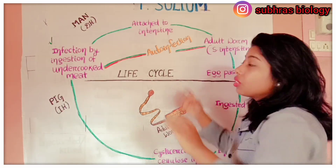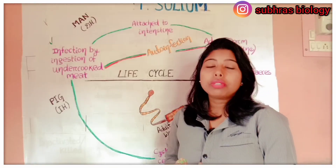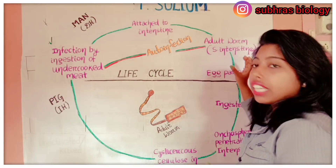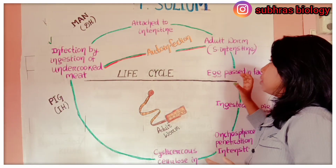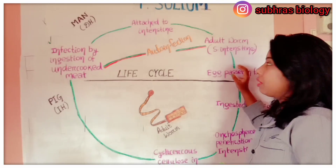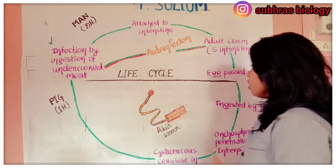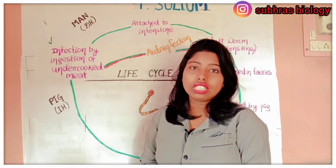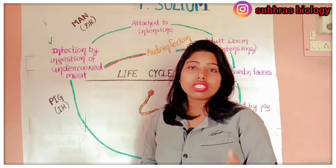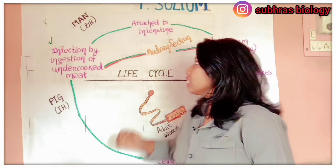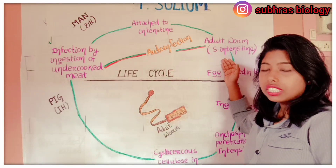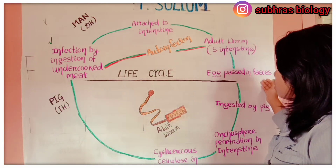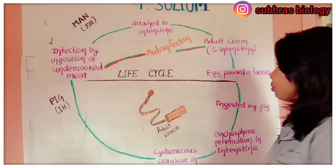Attached to the intestine, the worm grows to become an adult worm in the small intestine. After maturation, it lays eggs, and these eggs are excreted out through the human feces — because the adult worm stays in the intestine and lays eggs there, which then pass into the feces.